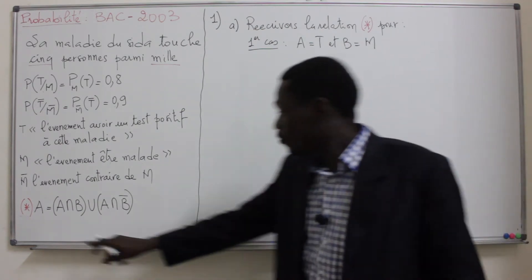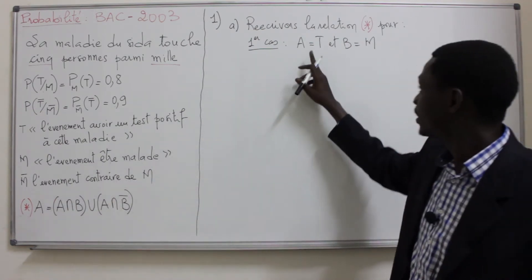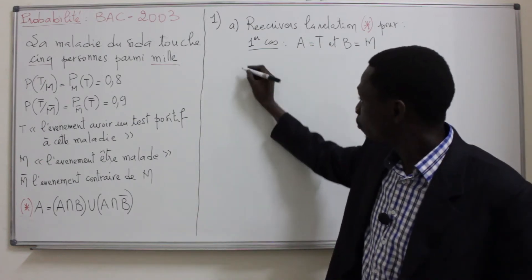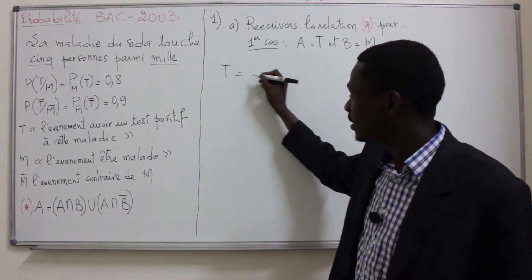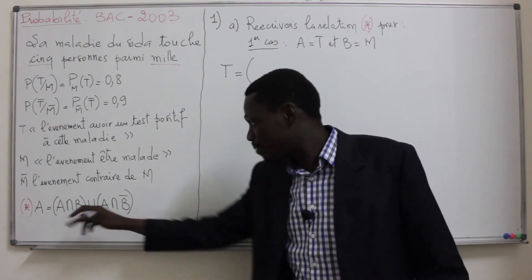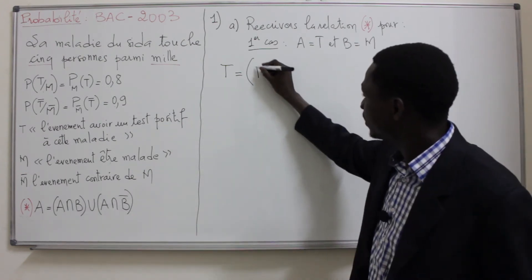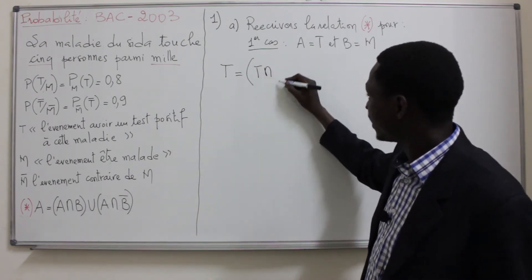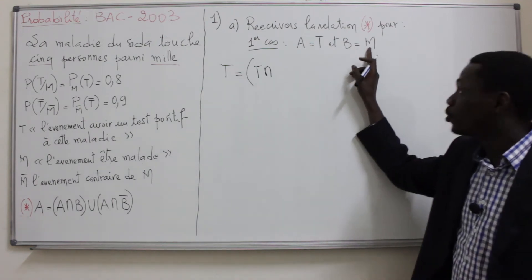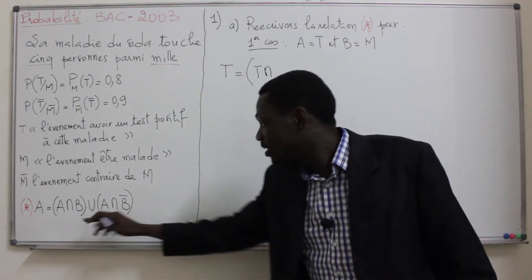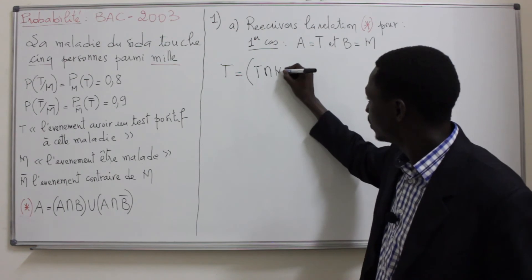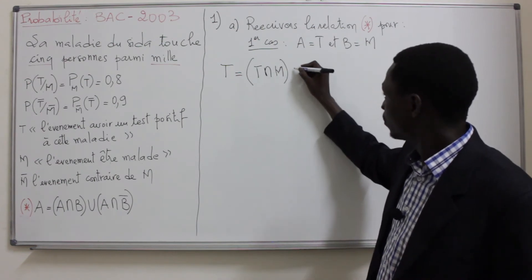On reprend, on va remplacer le A par T. Donc on aura T égale T inter - le B, on le remplace par M - donc T inter M,